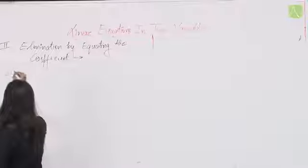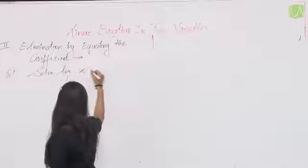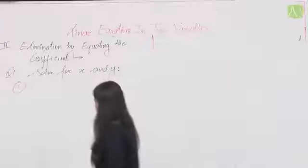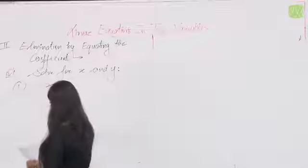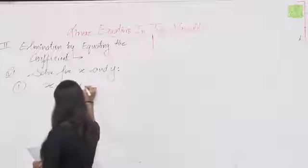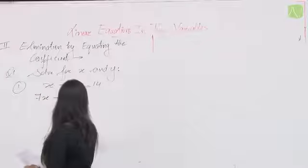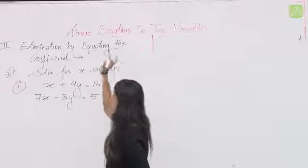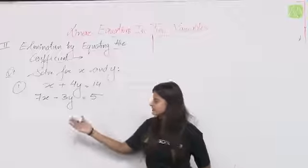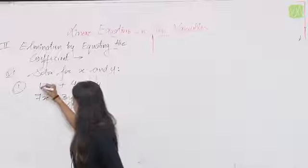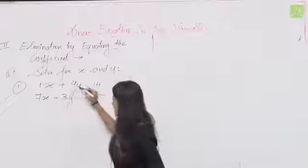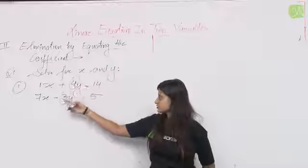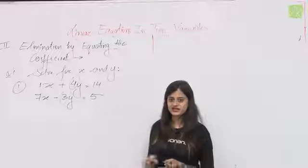Question 1: x + 4y = 14 and 7x − 3y = 5। Equating the coefficient का मतलब है किसी भी variable के coefficient को दोनों equations में same करना है। यहाँ x का coefficient 1 और 7 है। y का coefficient 4 और 3 है। अगर y के coefficients को same करना है तो 4 और 3 का LCM लेंगे, जो होगा 12।